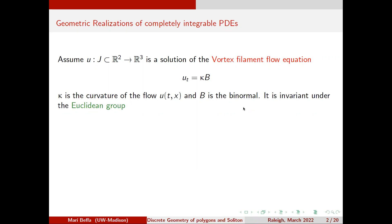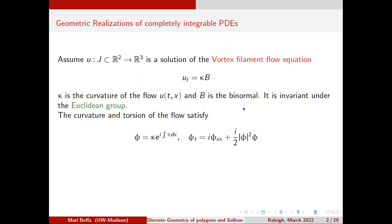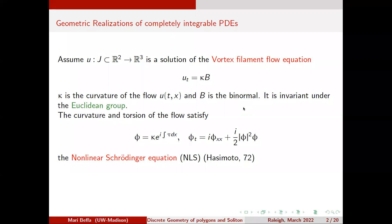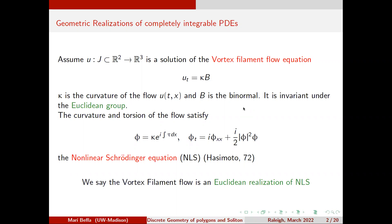If I take the polar decomposition of the curvature and the integral of the torsion and write an equation for that, I get the nonlinear Schrödinger equation. This transformation between the vortex filament equation and the nonlinear Schrödinger is classical — it's due to Hasimoto. So the vortex filament flow is an Euclidean realization of the nonlinear Schrödinger: they are essentially the same, differing only by the Euclidean group.